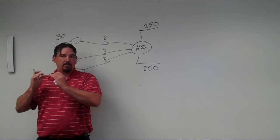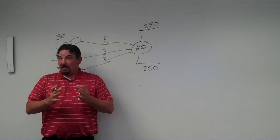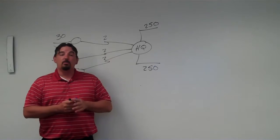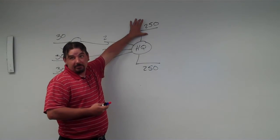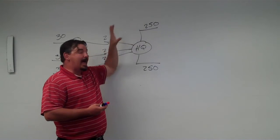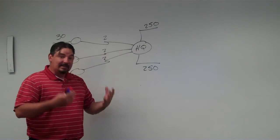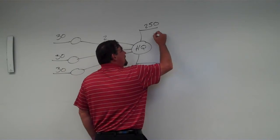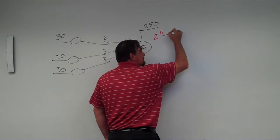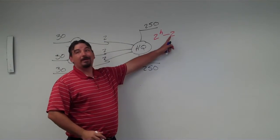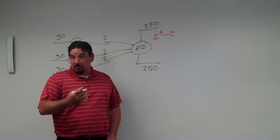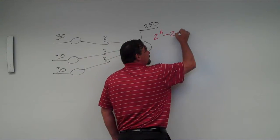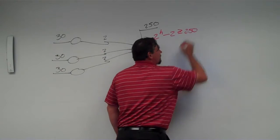This is the exact same thing we did when talking about subnetting to begin with. The whole purpose of variable length subnet masking is to look at where we have the most users. Our most users are at the corporate headquarters, where we're looking for at least 250 users. The number of usable hosts per subnet is found using 2 to the H minus 2, where H is the number of host bits. We need 2 to the H minus 2 to be greater than or equal to 250.